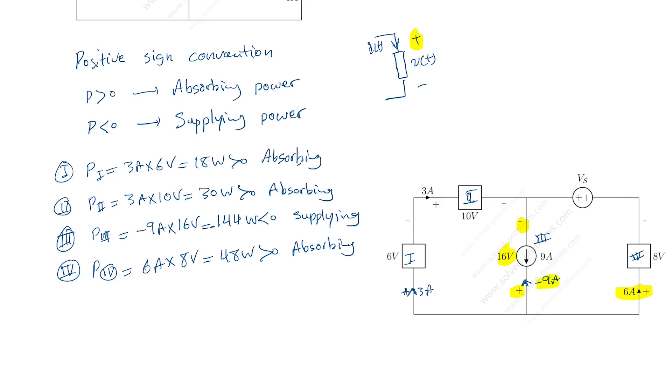So what is the power of the voltage source? Now we have three elements that are absorbing, one element that is supplying and one element that we don't know and we need to determine. So here we need to use energy conservation. So energy is conserved in electrical circuit. So sum of these powers should be zero. Or in other words, how much absorbing do we have? Absorbing we have 18 watt plus 30 watt plus 48 watt. That's 96 watt absorbing.